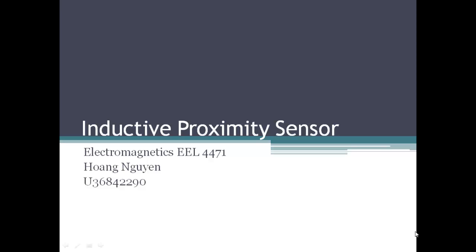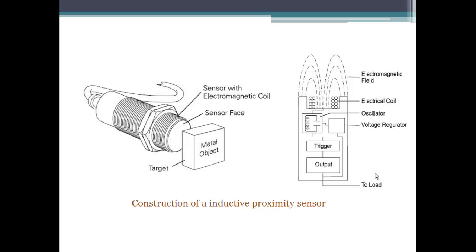Hello, my name is Hoang Nguyen and today I'm going to talk about inductive proximity sensors. Inductive proximity sensors are used to detect a metal target that falls within an inch or less of the sensing surface.